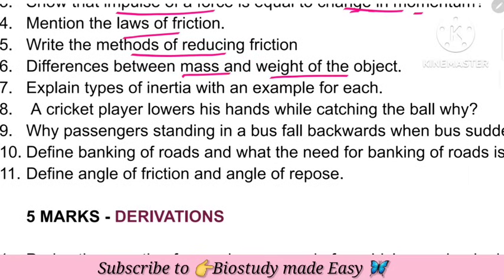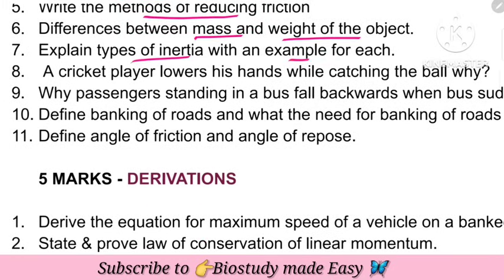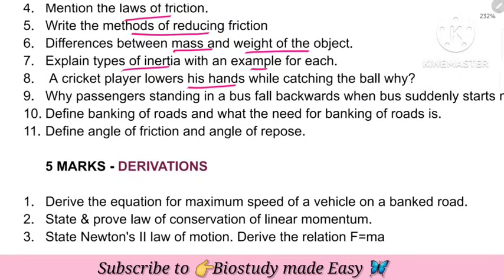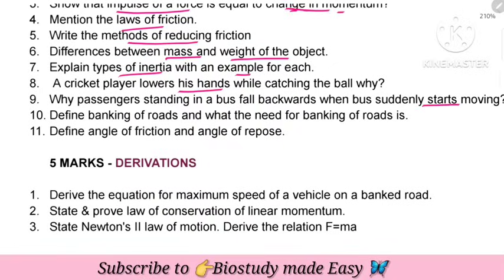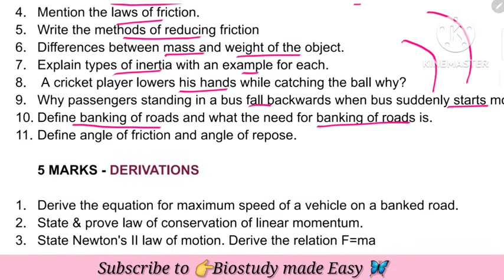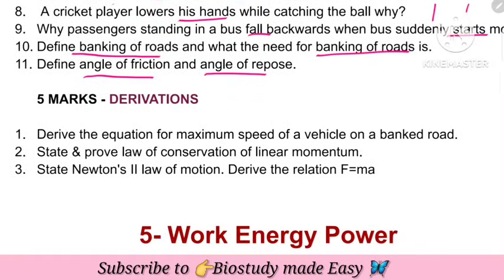Types of inertia with examples. Common example questions: how a cricket player catches a ball, why passengers move forward when a bus brakes, banking of roads — why is banking of roads important? Angle of repose, angle of friction and repose.